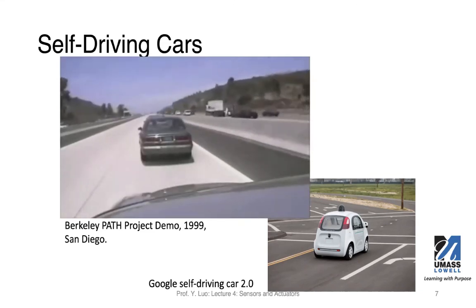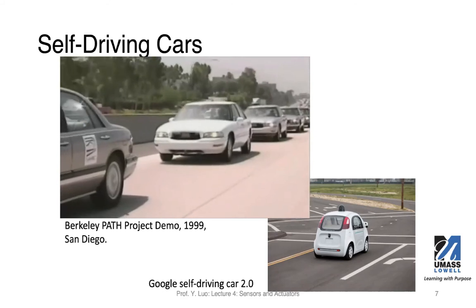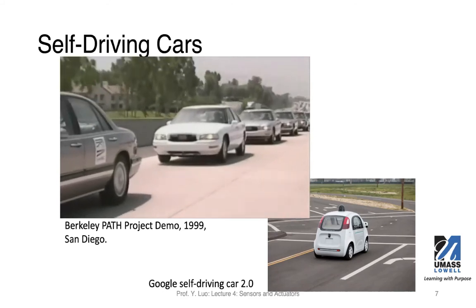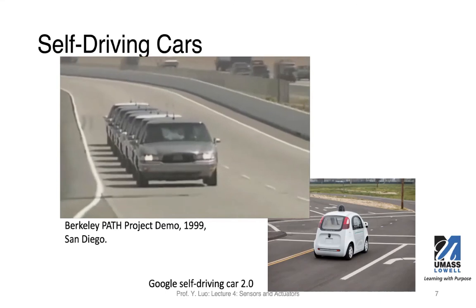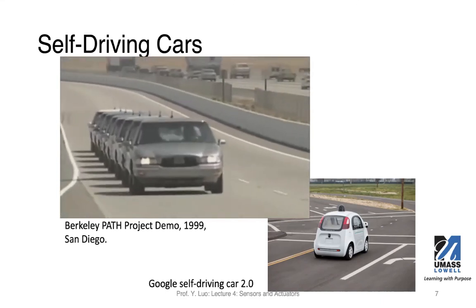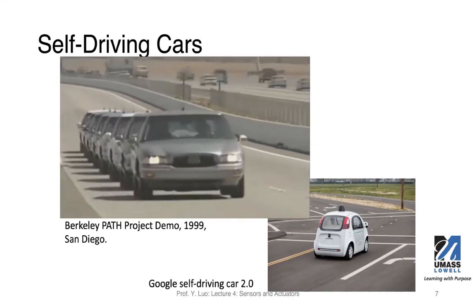On the top right of the slide, you see the Google self-driving car. It's much smaller in terms of the car, but the sensors are even more numerous than the earlier project. The main message here is that these sensors played a vital role in enabling such autonomous vehicles.